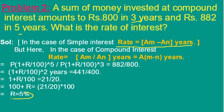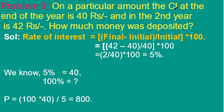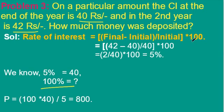At some times we can use shortcut formulas to get quick answers. In this problem, the compound interest at the end of the first year is Rs. 40 and in the second year is Rs. 42. How much money was deposited? The rate of interest can be calculated as (final minus initial) by initial into 100, which gives 5%. Since 5% equals Rs. 40 for one year, by cross multiplication 100% gives the principal amount as Rs. 800.